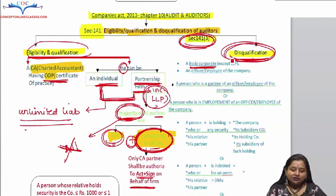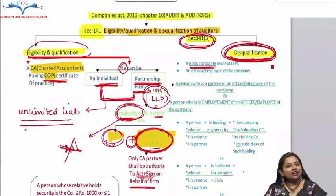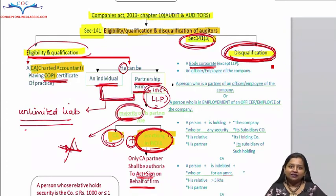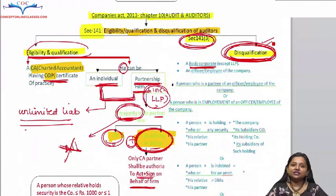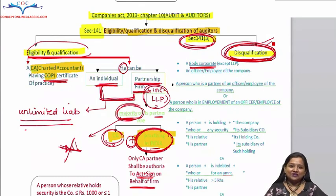Further, Section 141(3) contains some disqualifications which we will cover in the next class. Today was our first class so we kept it short. From next sessions onwards, classes will be 1 to 1.5 hours long. In the next class we will look at disqualifications – who cannot be appointed as Statutory Auditor. Thank you and God bless you all. Bye-bye.